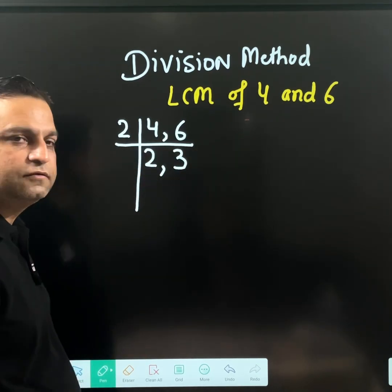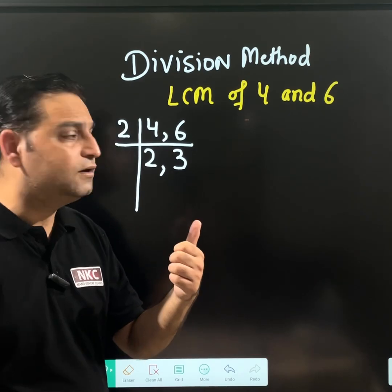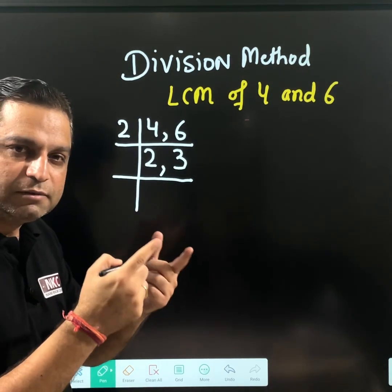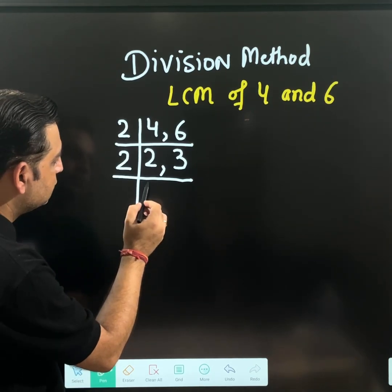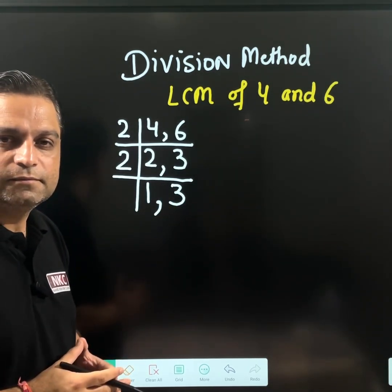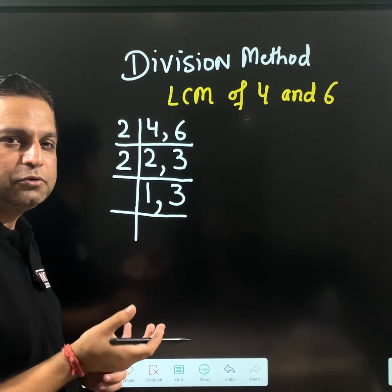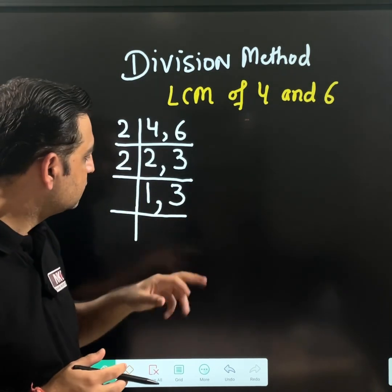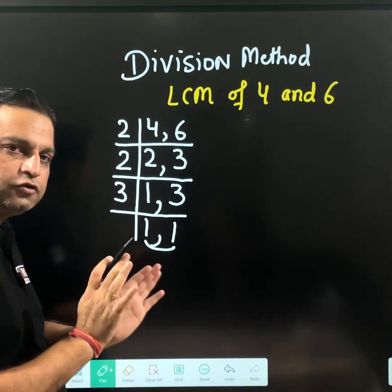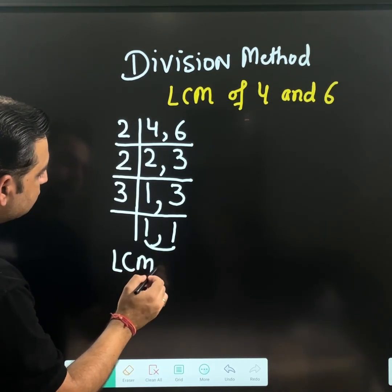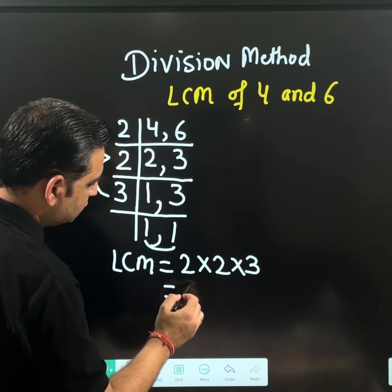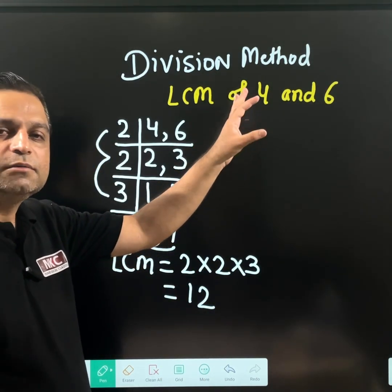Keep on dividing by primes until you get 1. At least one number is divisible by 2, so I am continuing dividing by 2. 2 times 1 is 2. Now 3 is not divisible by 2 — don't do anything, keep 3 as it is. No need to divide by 2 again because it is done. Next prime is 3. Yes, 3 is there, so divide by 3. Now both values are 1 — stop here. Your LCM is going to be the multiplication of all these numbers: 2 × 2 × 3, which is 12. That means LCM of 4 and 6 is 12. This is the best method to do it, and that is why we tell students to divide by primes — because there is no confusion.